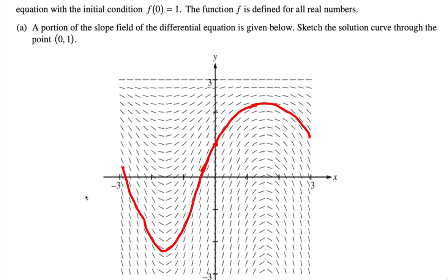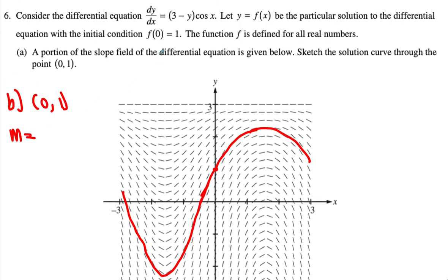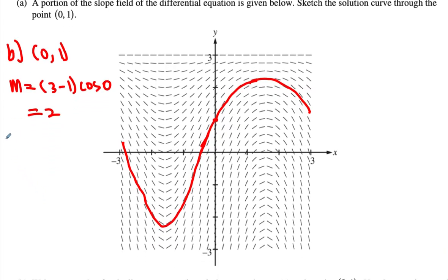For part B, the point is 0 and 1, that was given. We need to find the slope. The slope is based upon this equation, which is 3 minus y. Y equals 1 and cosine of 0. Cosine of 0 equals 1, and then 3 minus 1 becomes 2. So we know the slope is equal to 2.